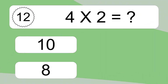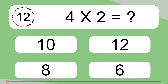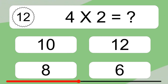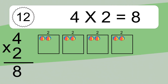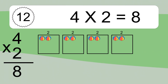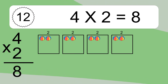4 times 2 equals what? 4 times 2 equals 8. We have 4 boxes, and each box has 2 colorful balls inside. If you count all the balls in all the boxes together, you will have 4 times 2 balls. This equals 8 balls.